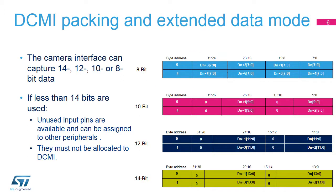Depending on the interface size — 8, 10, 12, or 14 bits — 2 or 4 data items are stored in a single 32-bit word. Once a complete 32-bit word is available, it is transferred by DMA to the memory. This allows us to reduce the bus bandwidth used by the DCMI, even for high-speed cases.